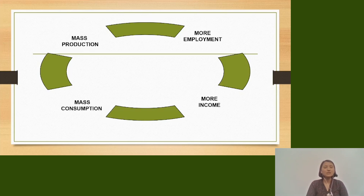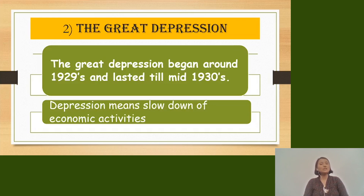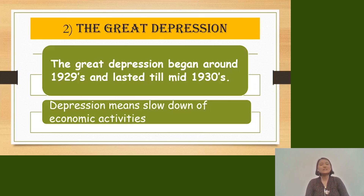From this flowchart, the relationship between mass production and mass consumption in the US can be understood easily. The next topic is the Great Depression. The Great Depression is a situation that started in 1929 and lasted till the 1930s — a period of slowdown and decline in economic activities.